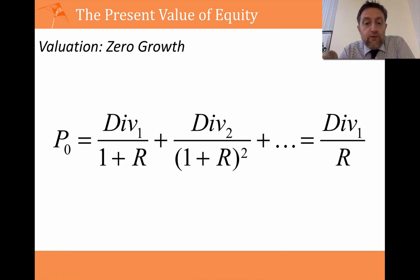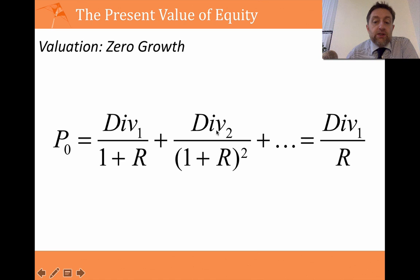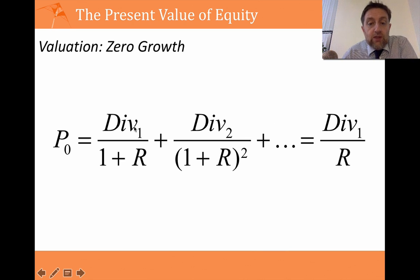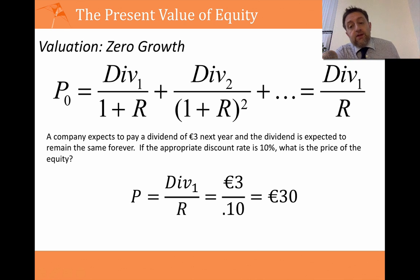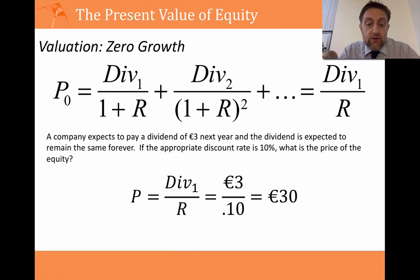Let's look at zero growth first. The price equals the dividend at time one divided by (1+R), plus the dividend at time two divided by (1+R), and so on. Since all dividends are equal, we use the perpetuity shortcut: price today equals dividend at time one divided by R. Here's a simple example: a company is expected to pay a dividend of €3 next year, the dividend stays the same forever, and the discount rate is 10%. So the price is €3 divided by 0.1, which equals €30.